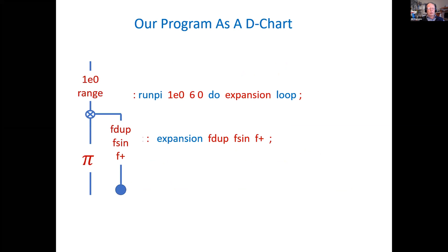In viewing this as a flowchart, we see the simplicity. At the top left, we set up the first value of floating point one. Set up a do loop with the little circle with an x on it. Floating dupe, floating sine, floating add. Do it six times. Out comes pi.